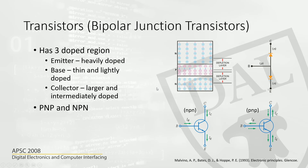Before we get into that, let me introduce you to the symbol. For the NPN transistor, the arrow indicates the direction of the conventional current. For a PNP transistor, the direction of the current is shown the other way. For an NPN transistor, the conventional current flows from the collector to the emitter, while in a PNP transistor, the conventional current flows from the emitter to the collector. Often we will be using NPN transistors.